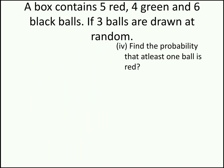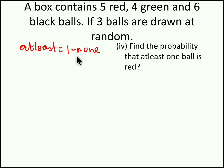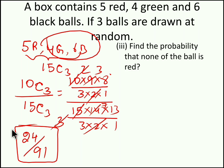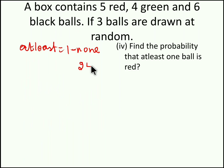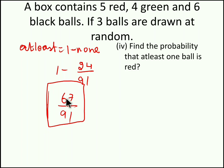Moving to our next question: find the probability that at least 1 ball is red. At least means we use the concept: P(at least 1) = 1 minus P(none). We discussed this in session 1 of probability. In the previous question we found P(none red) = 24/91. So 1 − 24/91 = 67/91. The probability of choosing at least one red ball while taking 3 balls from 5 red, 4 green and 6 black balls is 67/91.